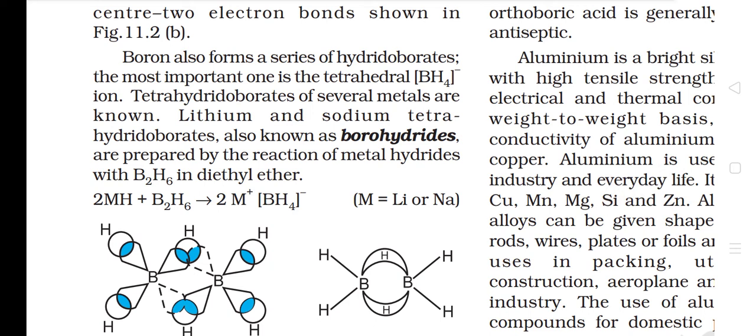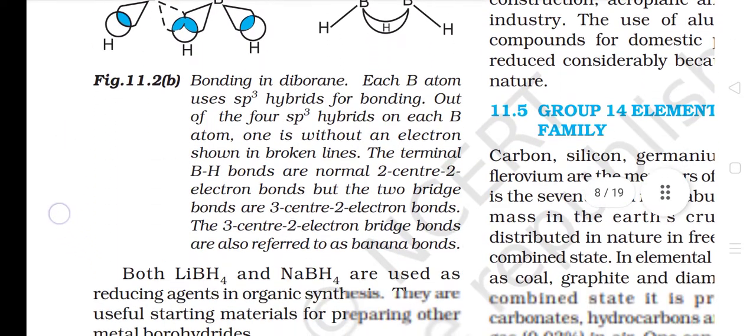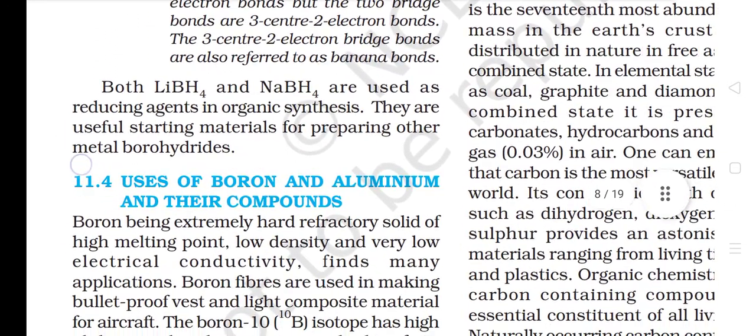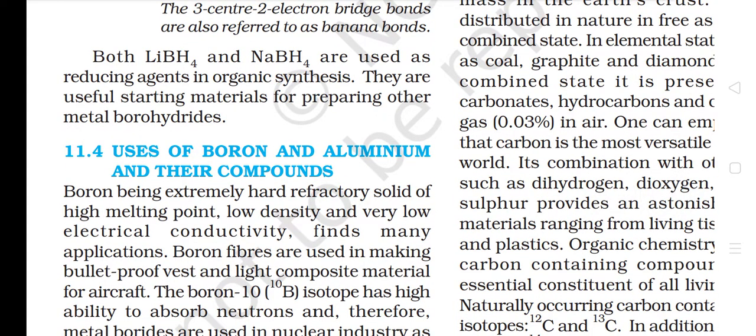Boron also forms a series of hydroborates. The most important one is the tetrahedral BH4- ion. Tetrahydroborates of several metals are known. Lithium and sodium tetrahydroborates, also known as borohydrides, are prepared by the reaction of metal hydrides with B2H6 in diethyl ether. Both LiBH4 and NaBH4 are used as reducing agents in organic synthesis and are useful starting materials for preparing other metal borohydrides.